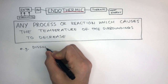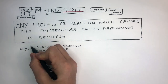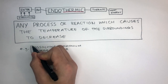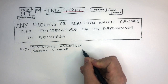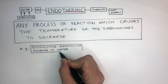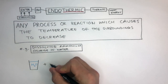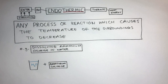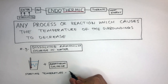For example, dissolving ammonium chloride in water is an endothermic process. Notice I said the word process because this is not a chemical reaction. To begin with, we have some water and some ammonium chloride, and we use a thermometer to measure the starting temperature of the water, which is 23 degrees Celsius.